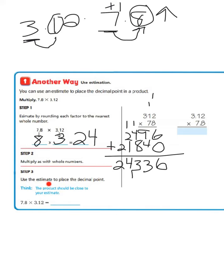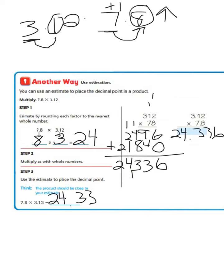Our next step is to use the estimate to place the decimal point. The product should be close to our estimate of 24. Our multiplication gave us 24,336. Since we know the whole number is going to be close to 24, we place our decimal point to the right of the whole number — to the right of the 4. So our answer is 24 and 336 thousandths. Therefore, 7 and 8 tenths times 3 and 12 hundredths equals 24 and 336 thousandths.